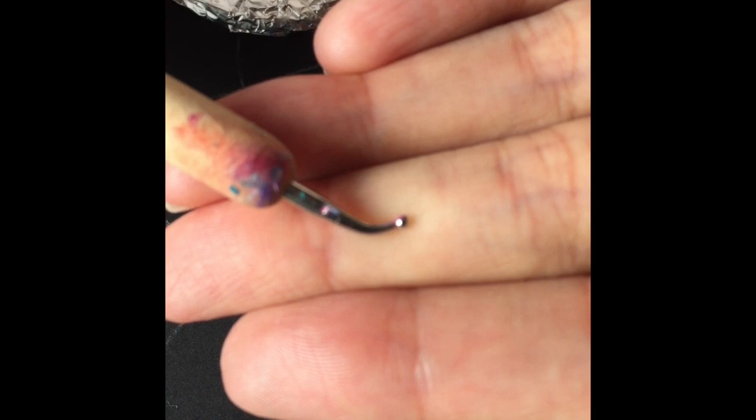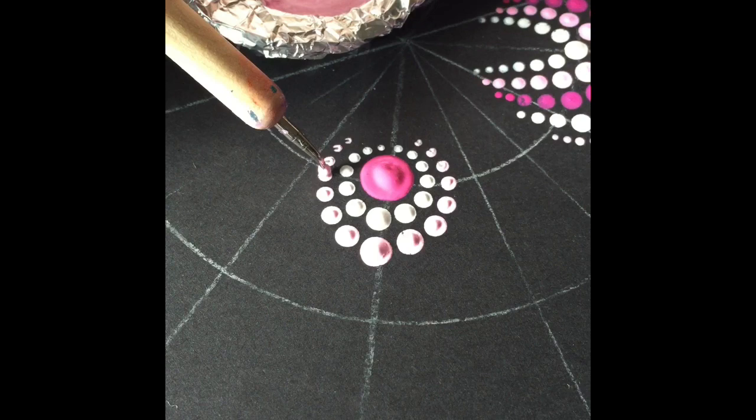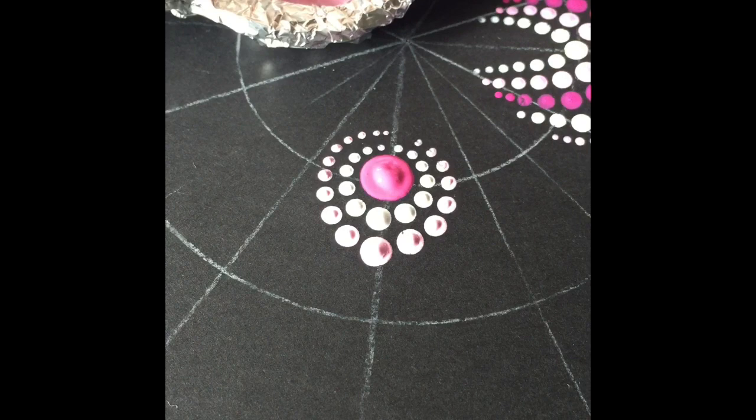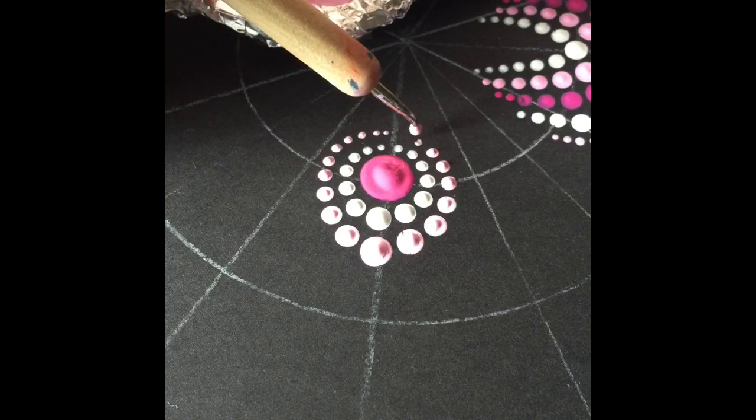So this is the second smallest of my nail art tools and I'll be using it to join the dots. So I just go over the last few dots that I did with that last tool because they're not perfectly round. So I just kind of fill in the gap a little bit in the middle and then join the dots.